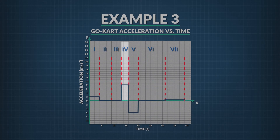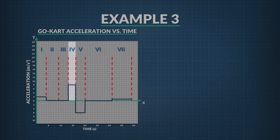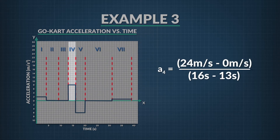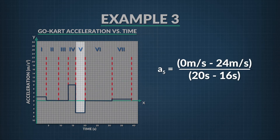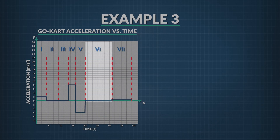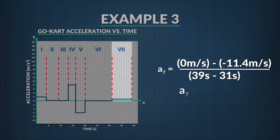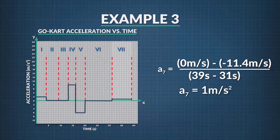In region four, the velocity goes from zero meters per second to 24 meters per second in three seconds. Plugging those numbers in, the go-cart's acceleration in region four is 8 meters per second squared — speeding up in the positive direction. In region five, the velocity drops from 24 meters per second to zero in four seconds, meaning acceleration equals negative 6 meters per second squared. The go-cart is slowing down in the positive direction. In region six, the velocity doesn't change, so acceleration is zero. In region seven, the velocity goes from negative 11.4 meters per second to zero in eight seconds, giving an acceleration that rounds to 1 meter per second squared. The go-cart is slowing down in the negative direction.